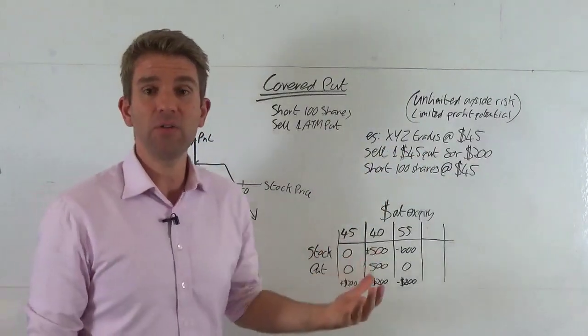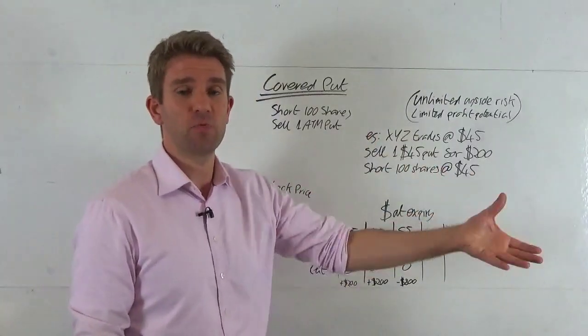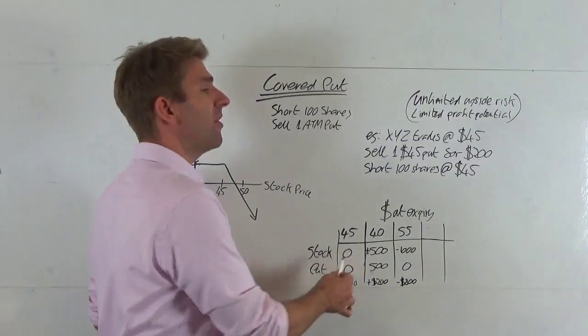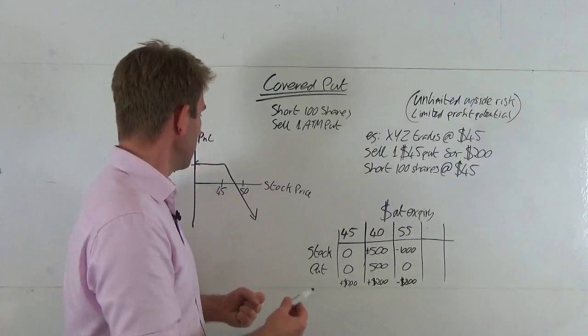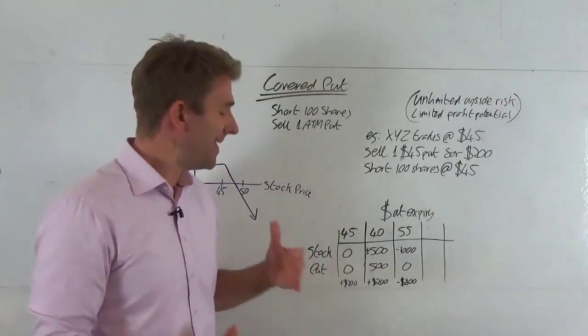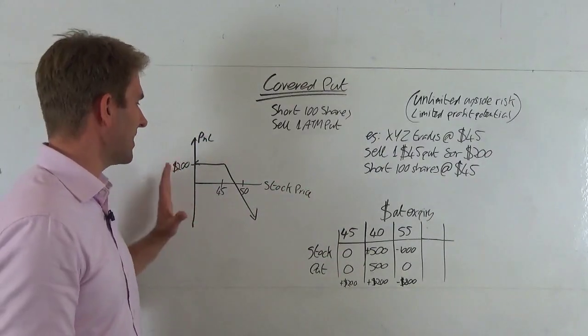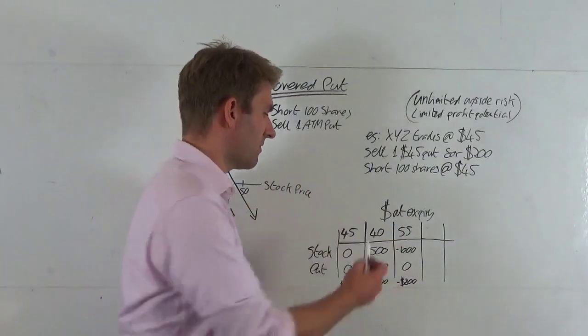It's currently trading at $45. There's no value there, so that's good for us because we've sold that to the guy. It's worthless. We've received the $200 credit. We'll take that, thanks very much. We've made nothing on the stock short, but we've received $200 credit. So that's good because if it just sits there and does nothing, we wouldn't have made anything if we hadn't have sold that put. So that's a good outcome for us, that's $200. And notice that's exactly the maximum that we can make, and I'll show you that with the $40 example.